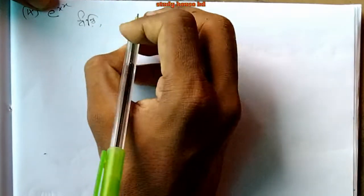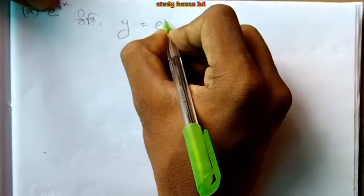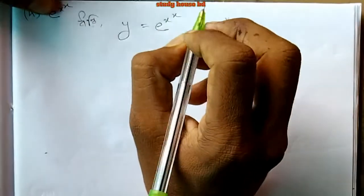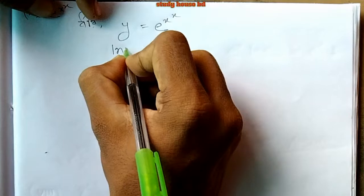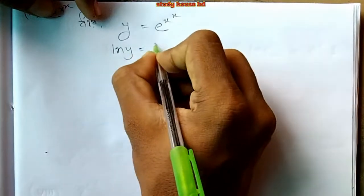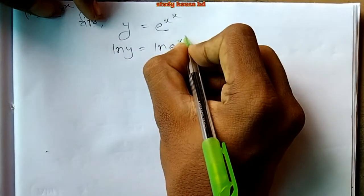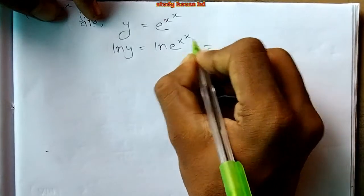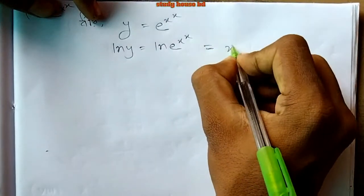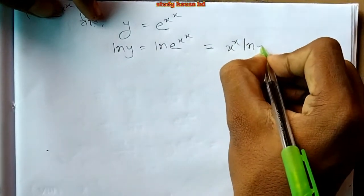Second problem: y equals e to the power x to the power x. Taking ln of both sides: ln y equals ln of e to the power x^x, which simplifies to x to the power x times ln e.